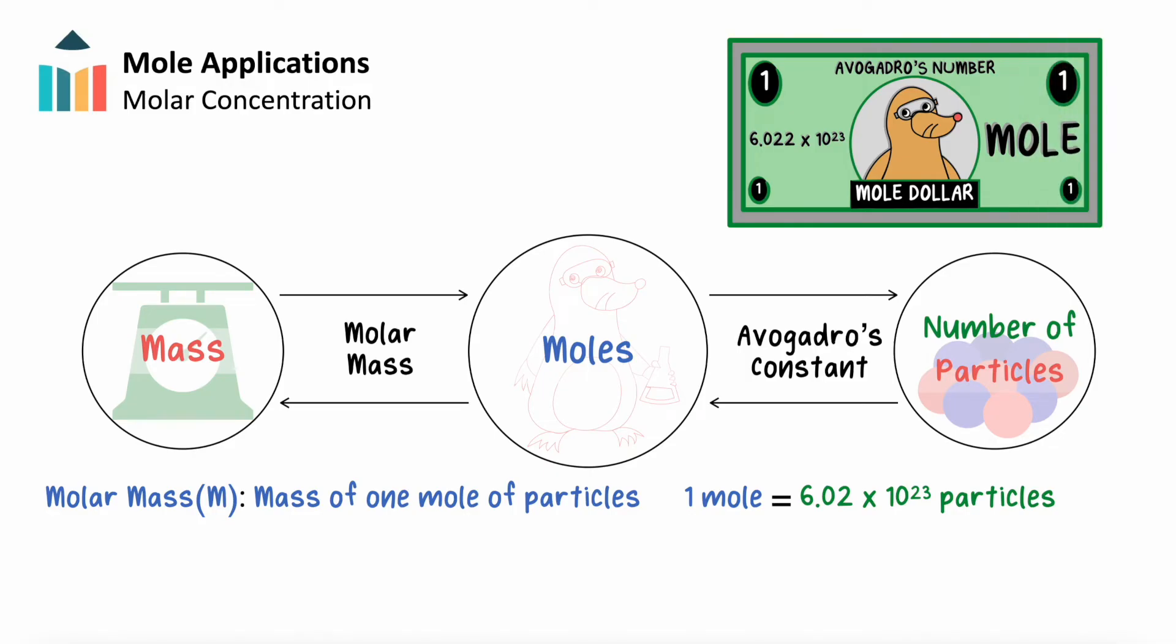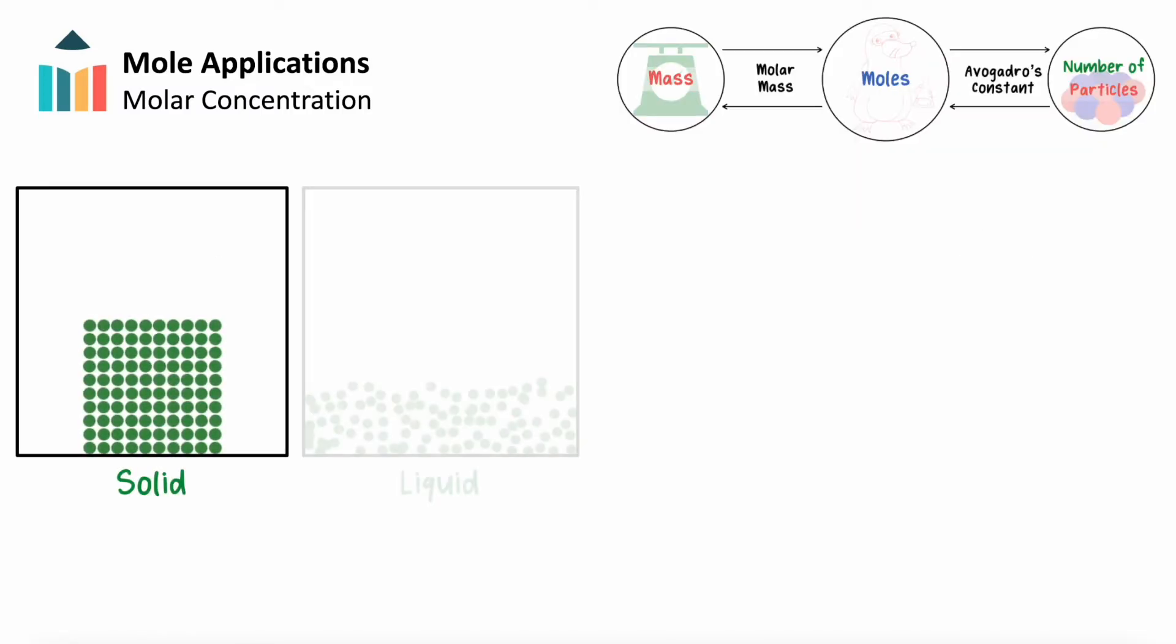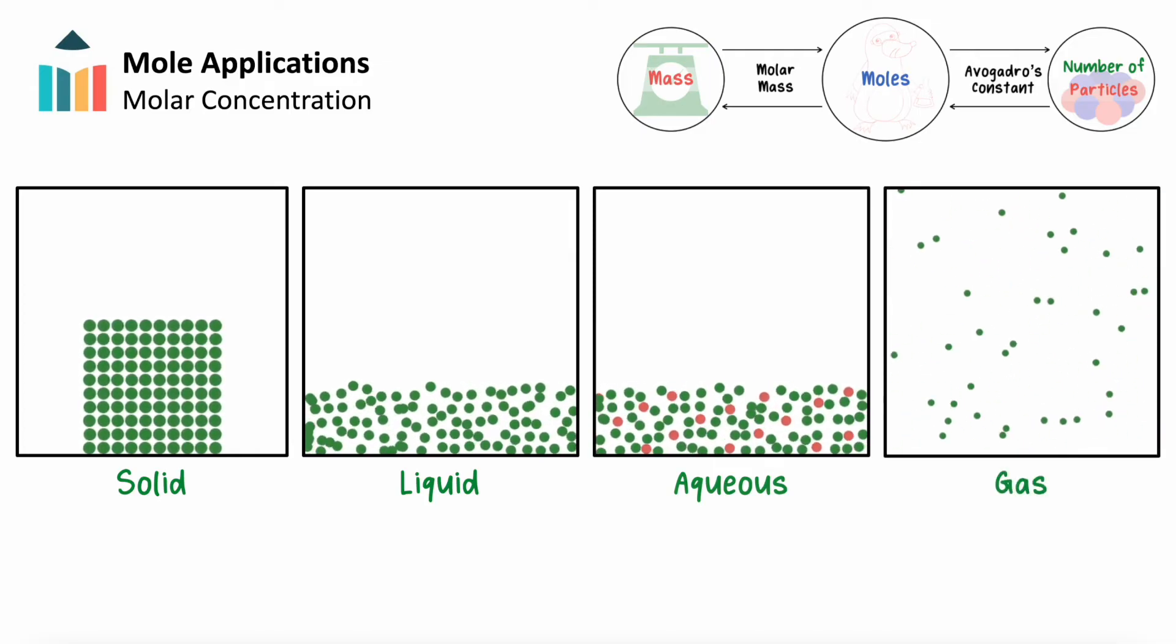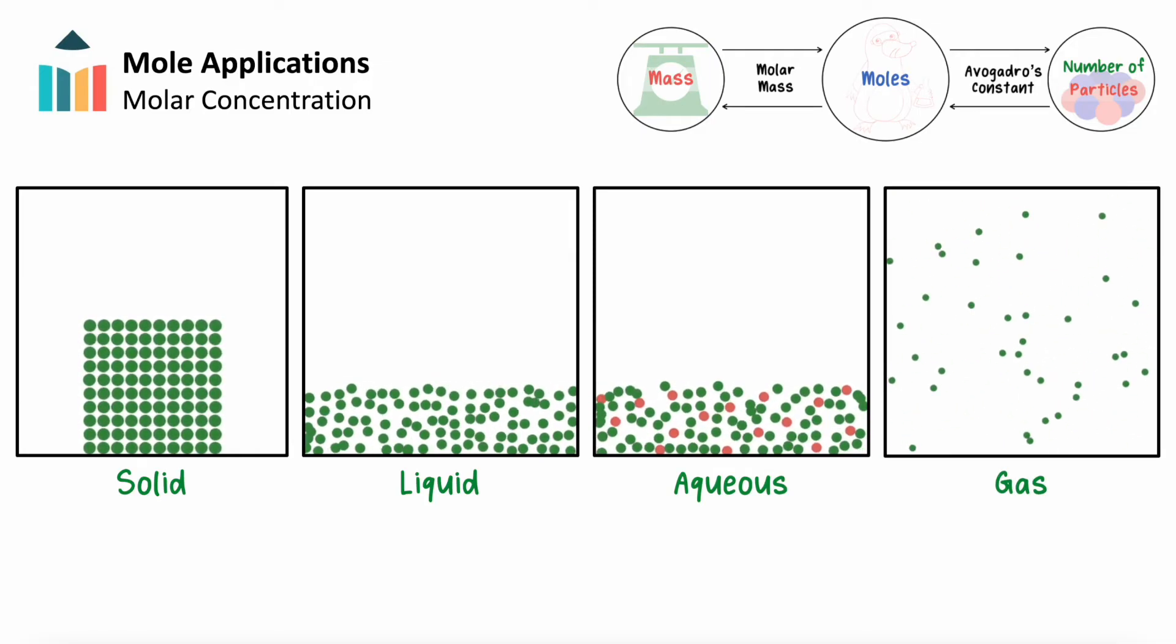When we think about the forms in which substances are found in a normal chemical reaction, the states typically include pure solids, pure liquids, aqueous solutions, and gases. You'll need to know how to derive the number of moles of a substance in any of these states.